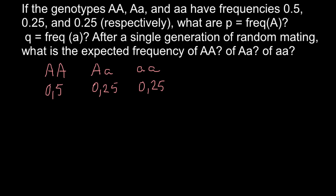I want to state that all alleles p plus q should add up to 1. Here, p stands for the dominant allele — capital A — and q stands for the recessive allele — small a. If we add all these alleles, we should get the number 1.